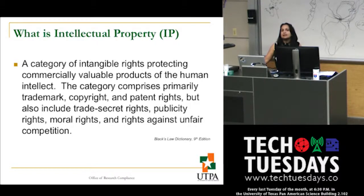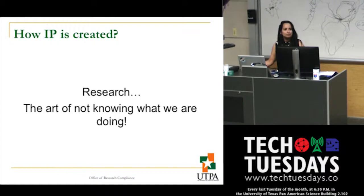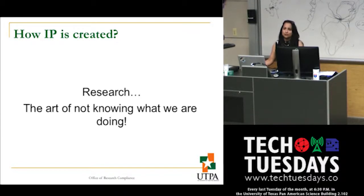How intellectual property is created in a university setting is very unique to something we call research — it's basically the art of not knowing what we're doing. That's why we call it research; otherwise we would expect a given result. Because research results are not expected, we cannot promise results to somebody when they contract with the university for a research project.